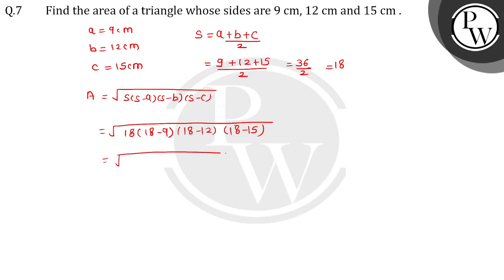18 as it is, 18 minus 9 is 9, 18 minus 12 is 6, 18 minus 15 is 3. What do we see?